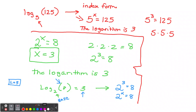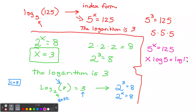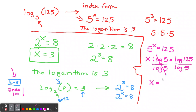What if you didn't know and couldn't guess the index? For example, 5 to the x equals 125 — we know it's 3, but if we didn't, you bring the x down and make everything else a log: x times log 5 equals log 125. Then divide log 5 on both sides, just like algebra. On your calculator, put log 125 divided by log 5, and your answer will be 3.